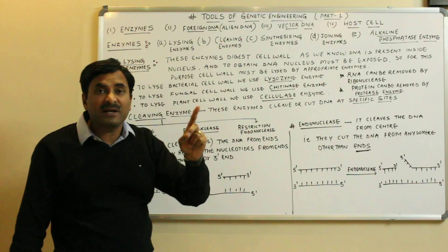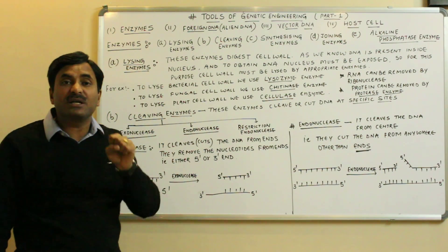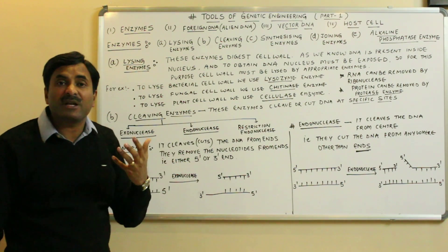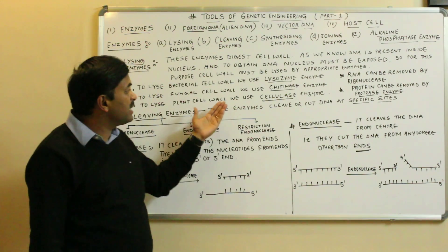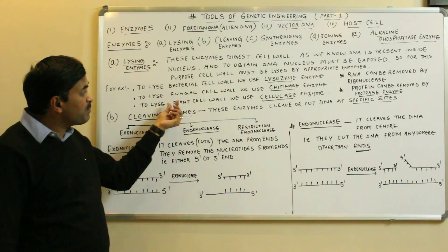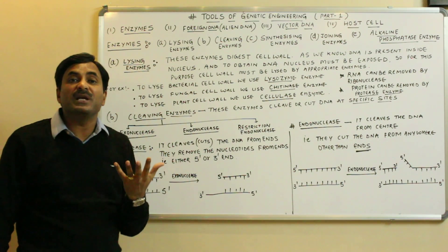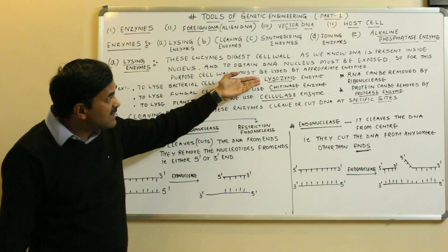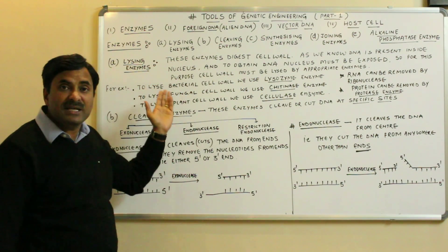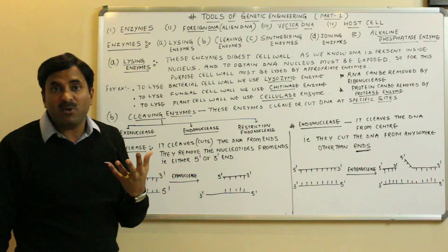Chitinase will dissolve the chitin. For the third case, if we want to isolate DNA from a plant cell, the plant cell wall is made up of cellulose. To lyse the plant cell wall made of cellulose, we use a cellulase enzyme. So lysozyme, chitinase, and cellulase are all lysing enzymes that lyse or break down the cell wall.